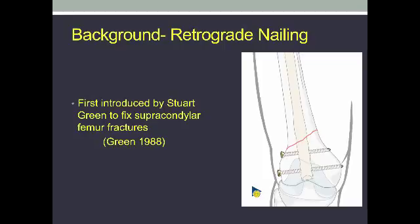Stuart Green first introduced the retrograde intramedullary nail for supracondylar femur fractures. He introduced this because he studied the traditional way to fix these fractures, which was often with an angled blade plate or a compression screw on the lateral side, and he found that this created a high rate of malunion because the fracture was put into varus stress. Retrograde intramedullary nailing was a solution to that problem.